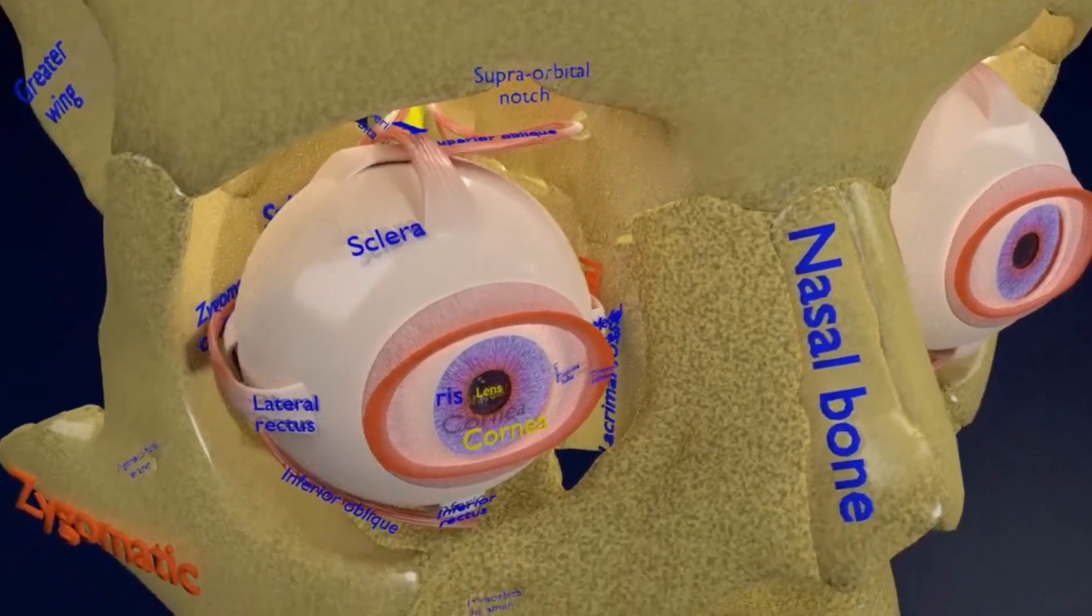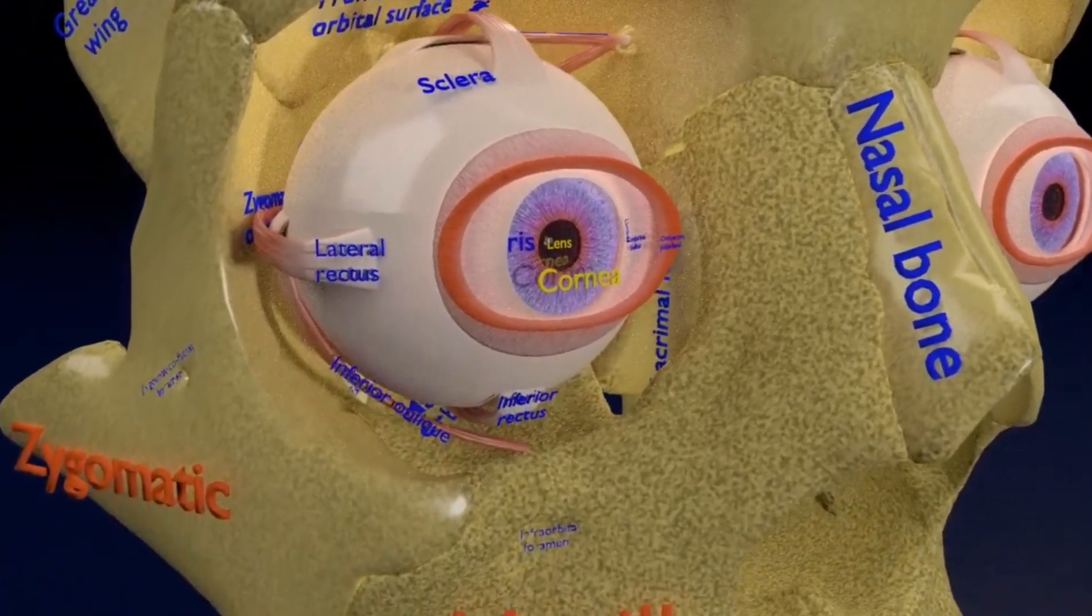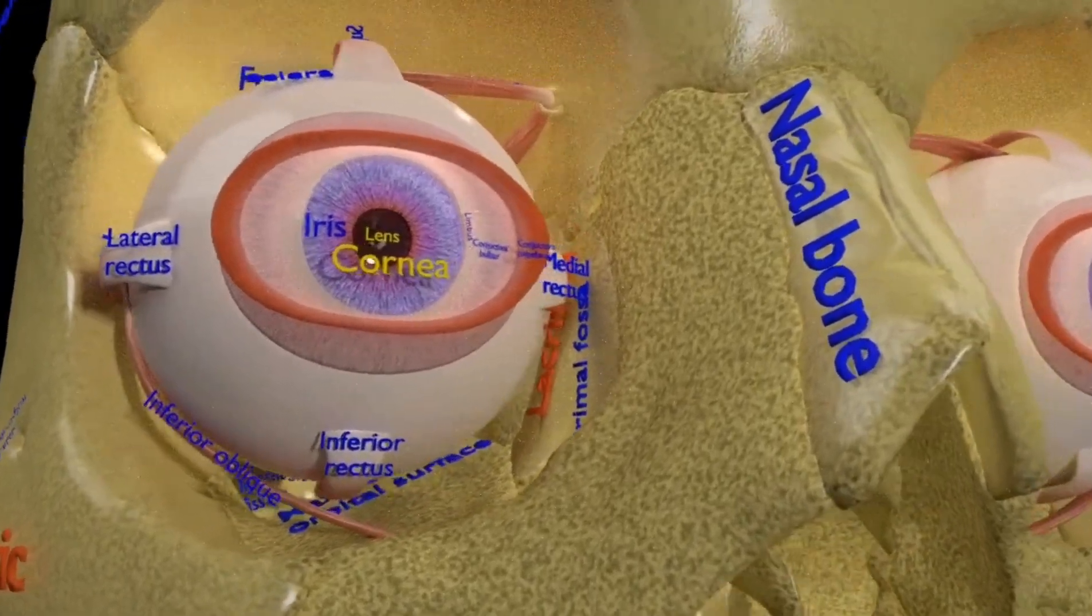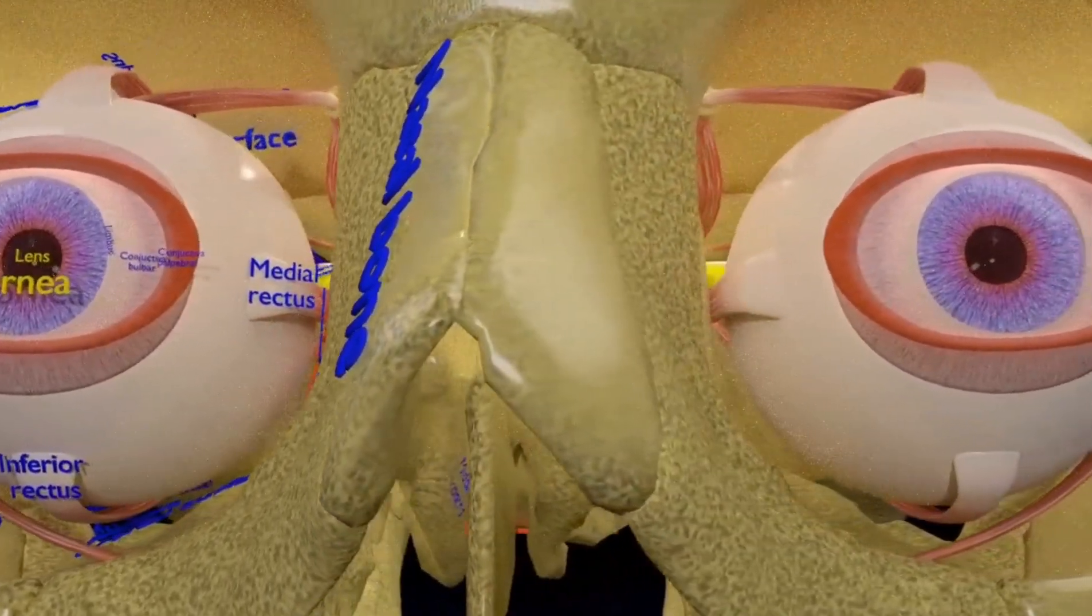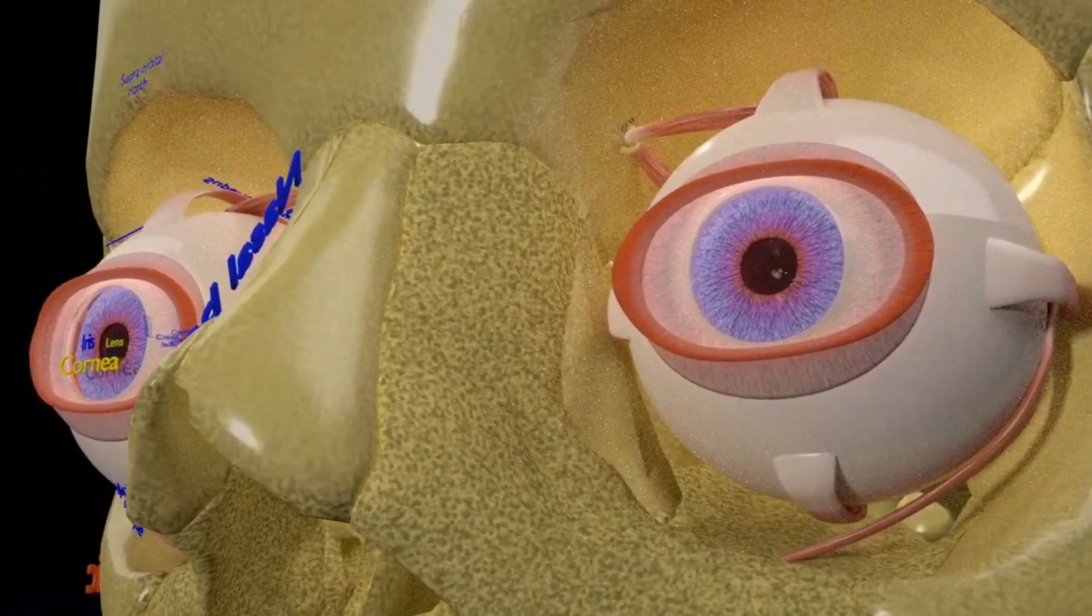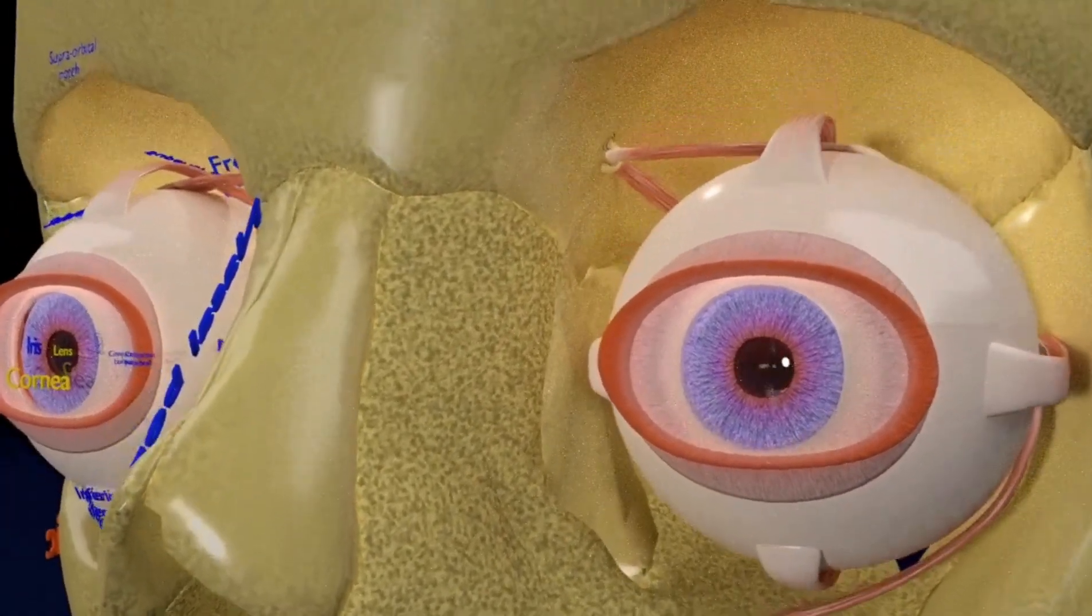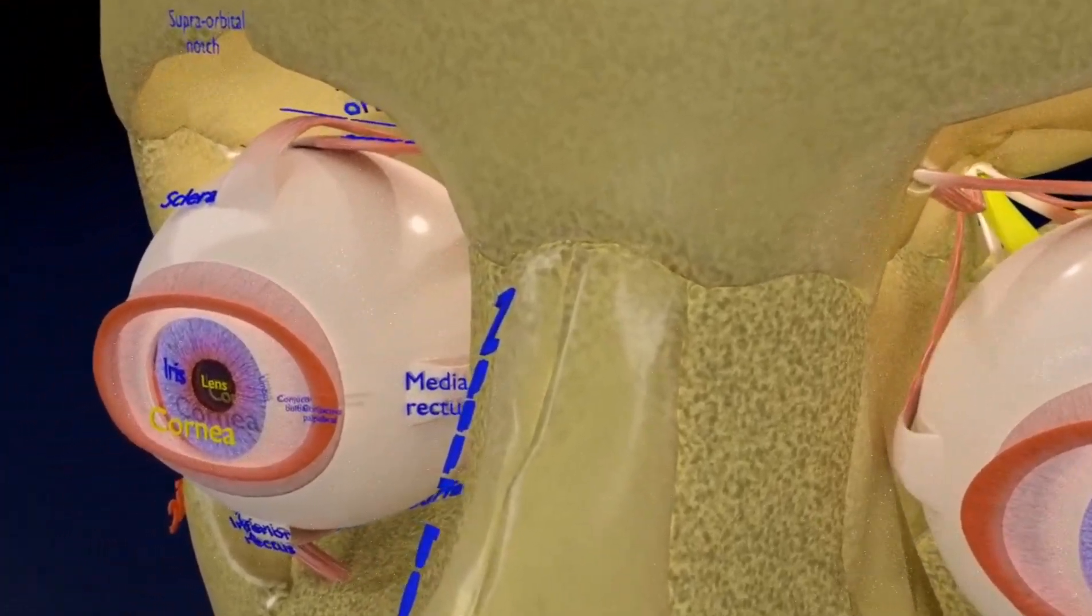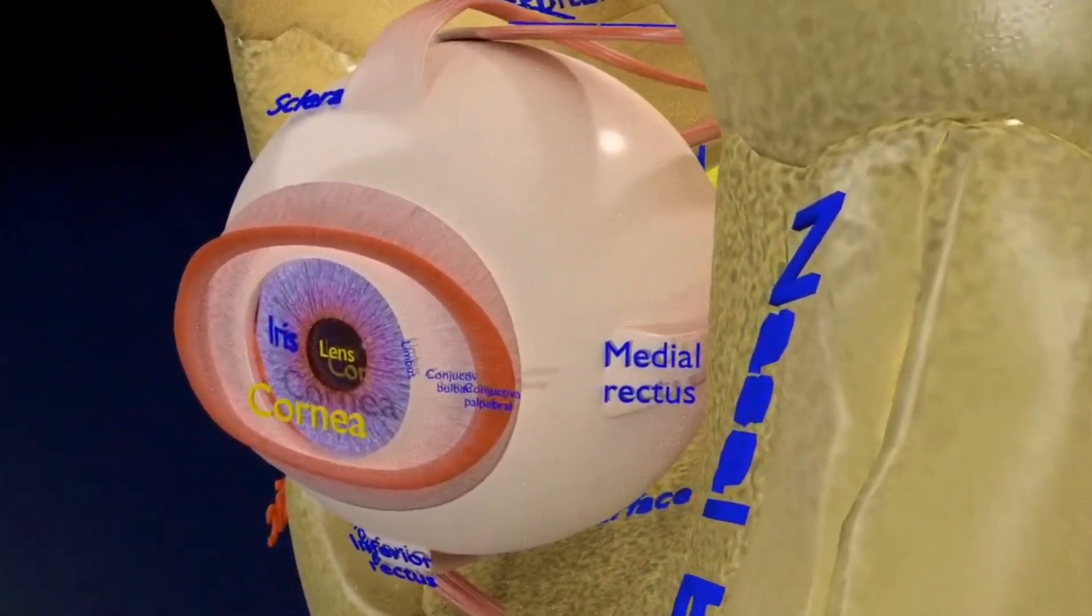The bones visible here are the frontal, nasal bone, zygomatic and maxilla. The other bones that are not visualized here are lacrimal, palatine, ethmoid and sphenoid bone. And all these bones are still part of the orbit, but not visualized here.